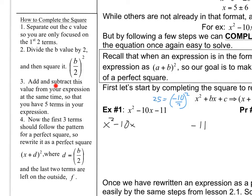Then it says add and subtract this value from your expression at the same time so that you have five terms. You're going to first add 25, but you're not allowed to just add something to an expression — that changes its value. So at the same time we're going to subtract 25. The reason we can do this is these things add up to zero, meaning I've essentially added zero to the expression. I haven't changed its value, only the way it looks. And now this is a perfect square.